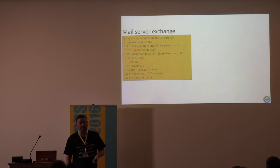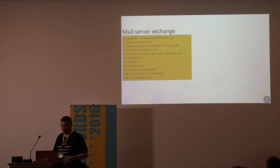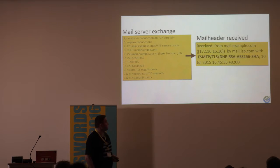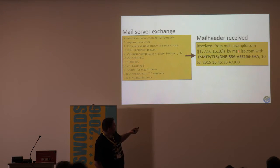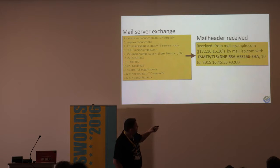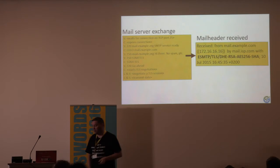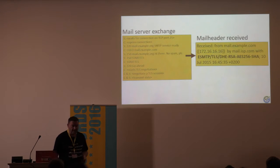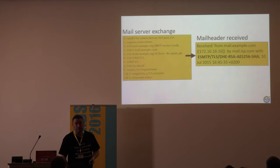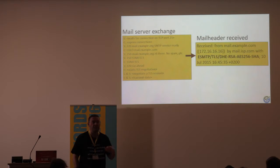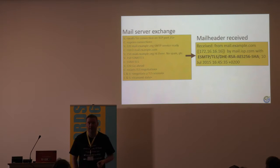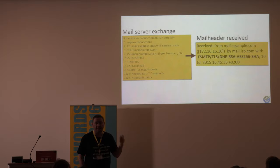Anybody see a problem with this? The initial connection is plain text. Here's an example of a mail header: ESMTP TLS, DHE, RSA, AES256, SHA — good encryption. But one of the many problems is that initial plain text connection. The server's '250 STARTTLS' response can be removed in a man-in-the-middle attack. You can change just one letter and everything will be plain text.